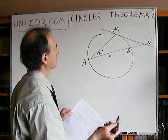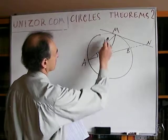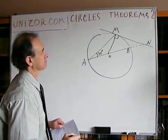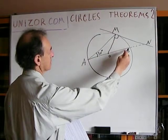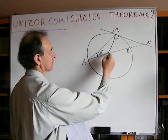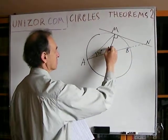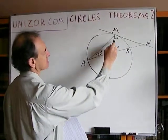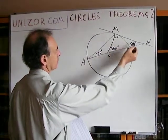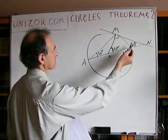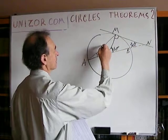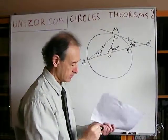Let's connect the tangency point M with the center. As we know, this is a right angle. Now, angle MAB is inscribed, supported by arc MB. Angle MOB is central, supported by the same arc, so it's twice as big — 60 degrees. If this is 60 and this is 90, the remaining angle is 30, because triangle OMN is a right triangle and its angles must sum to 180. Since triangle AMN has two angles congruent to each other, the corresponding sides are also congruent, and the triangle is isosceles. Simple.